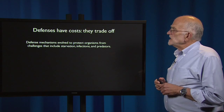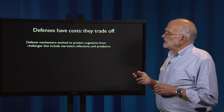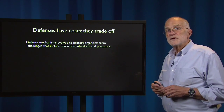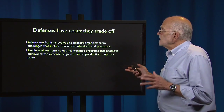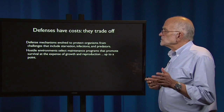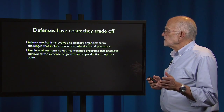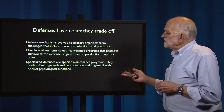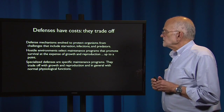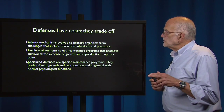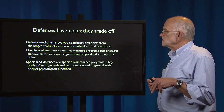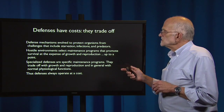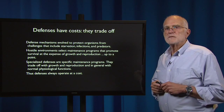All defenses have costs — they trade off. They evolve to protect organisms from challenges, including starvation, infection, and predators. Hostile environments select maintenance programs that promote survival at the expense of growth and reproduction, up to a point. Specialized defenses are specific maintenance programs. They trade off with growth and reproduction and, in general, with normal physiological functions. Thus defenses are always operating at some cost.